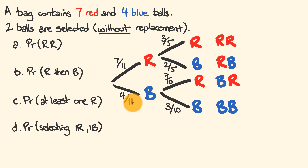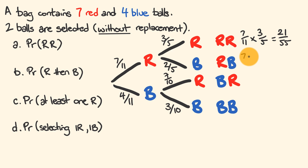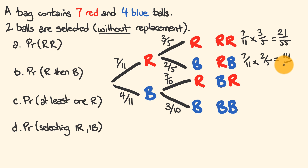Now we can work out the probabilities. Red then red: 7/11 × 3/5 = 21/55. Red then blue: 7/11 × 2/5 — seven times two is 14, eleven times five is 55 — giving 14/55.